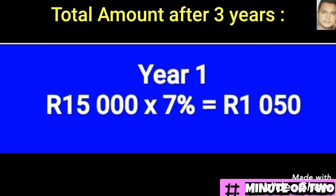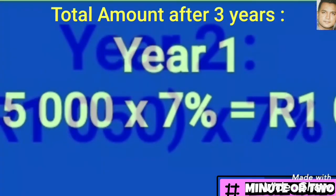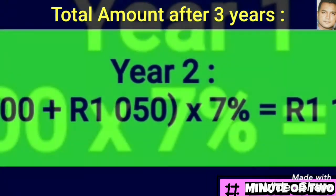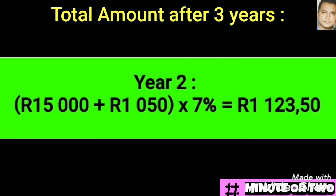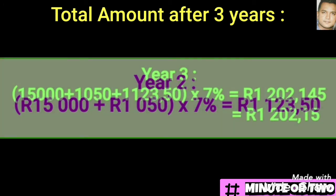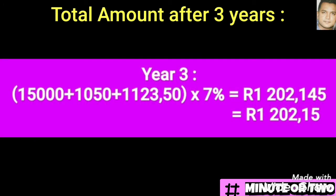As mentioned, you add the interest for the previous year onto the R15,000 and then find 7% of that new amount to get the interest for the second year.